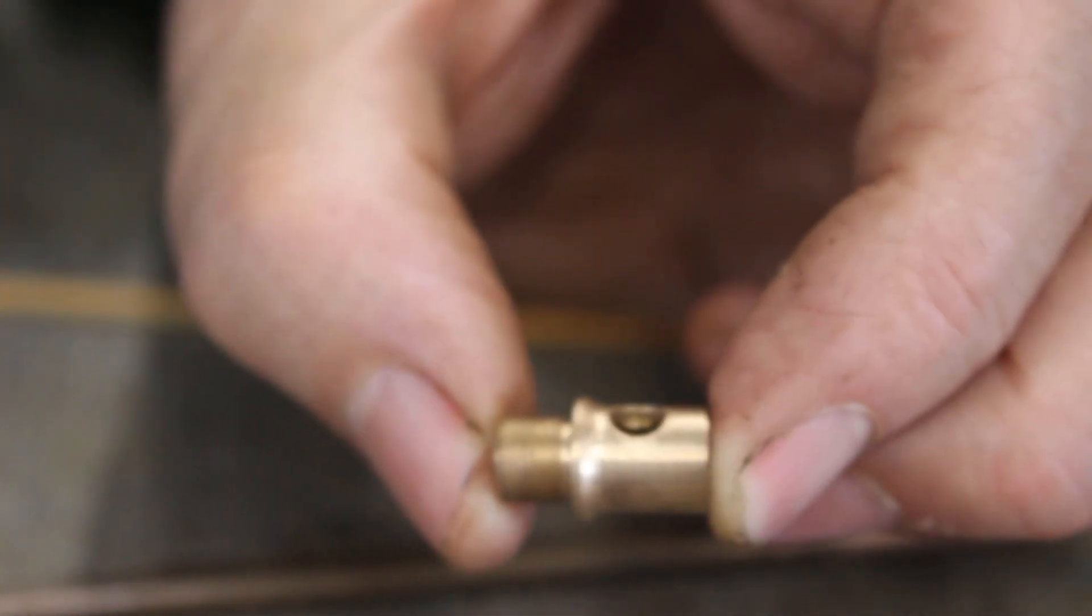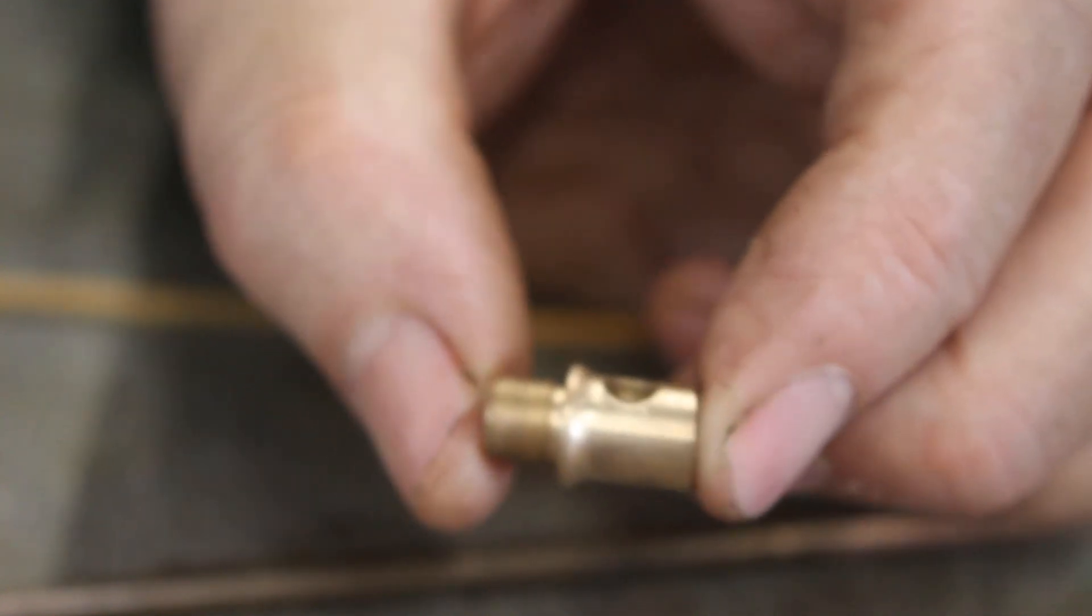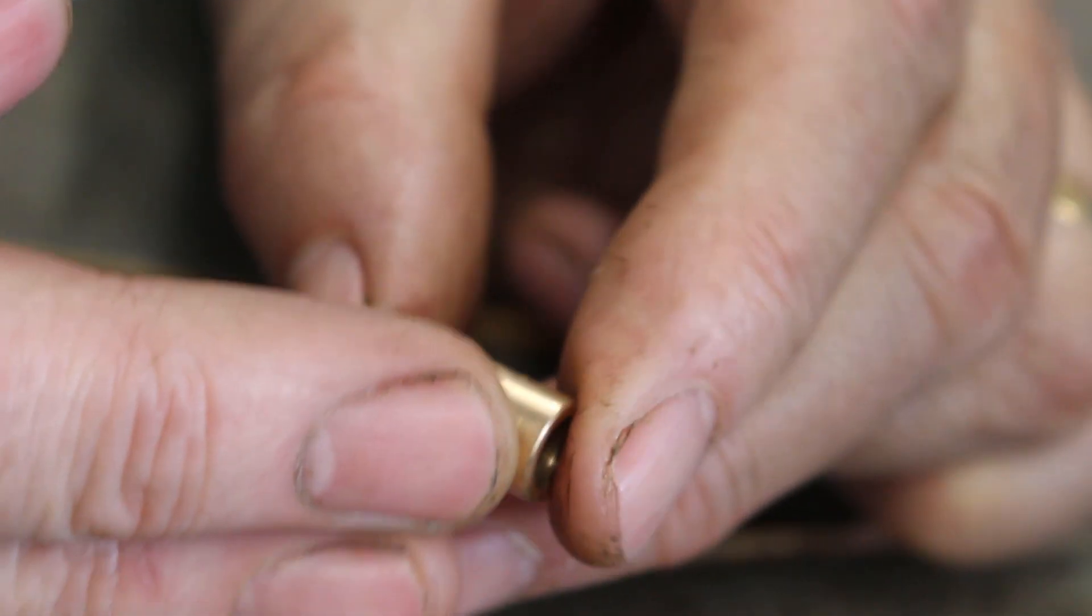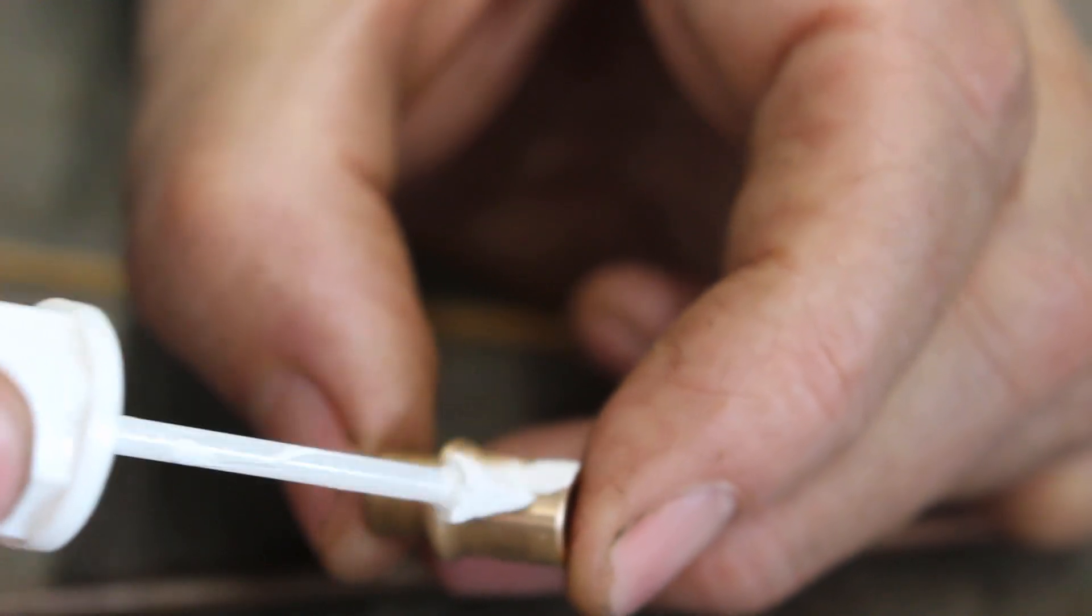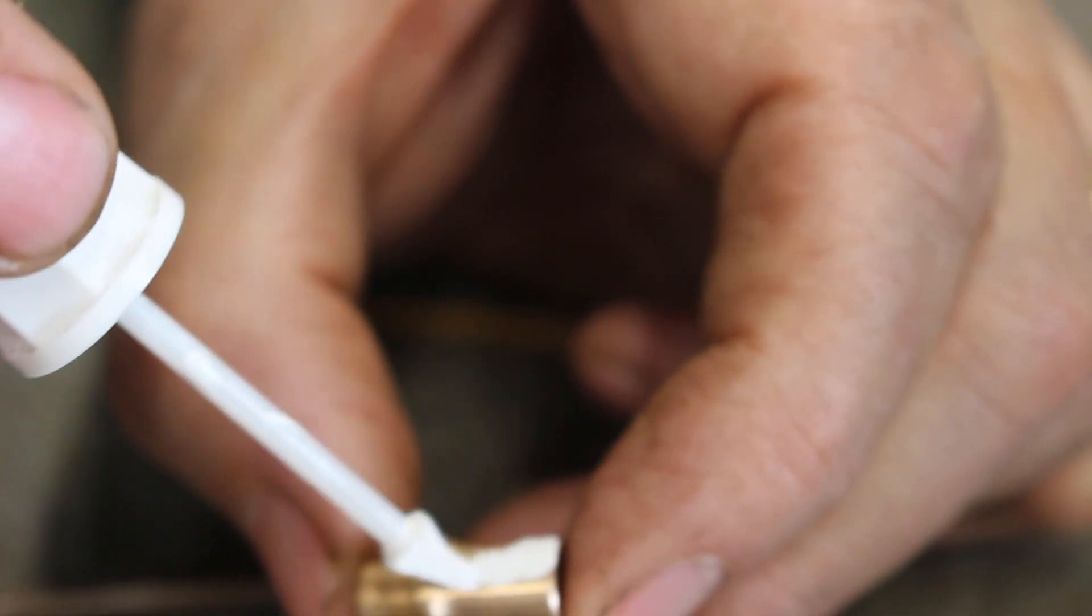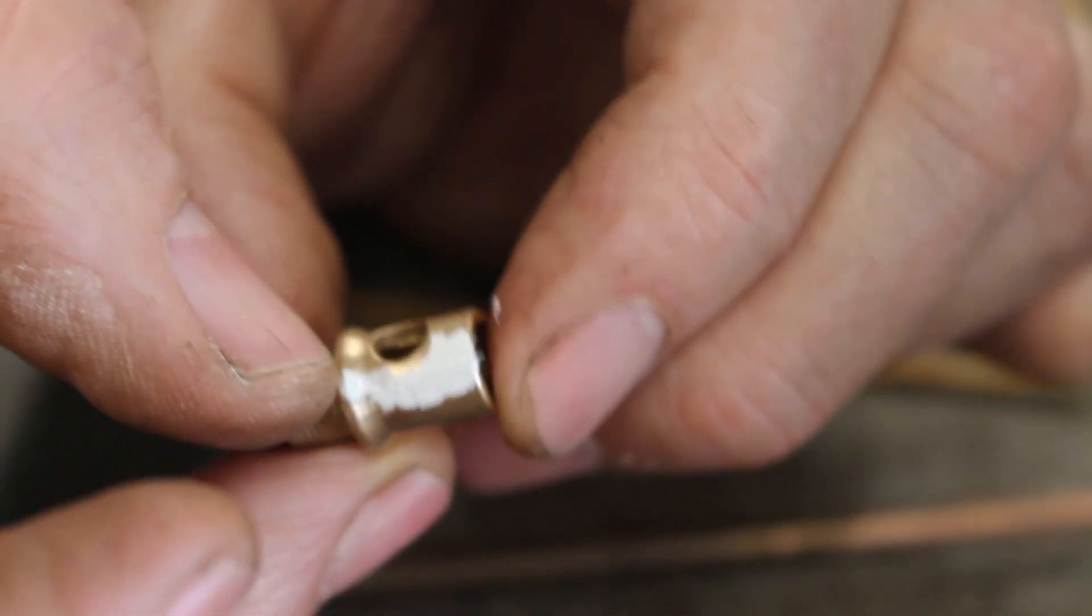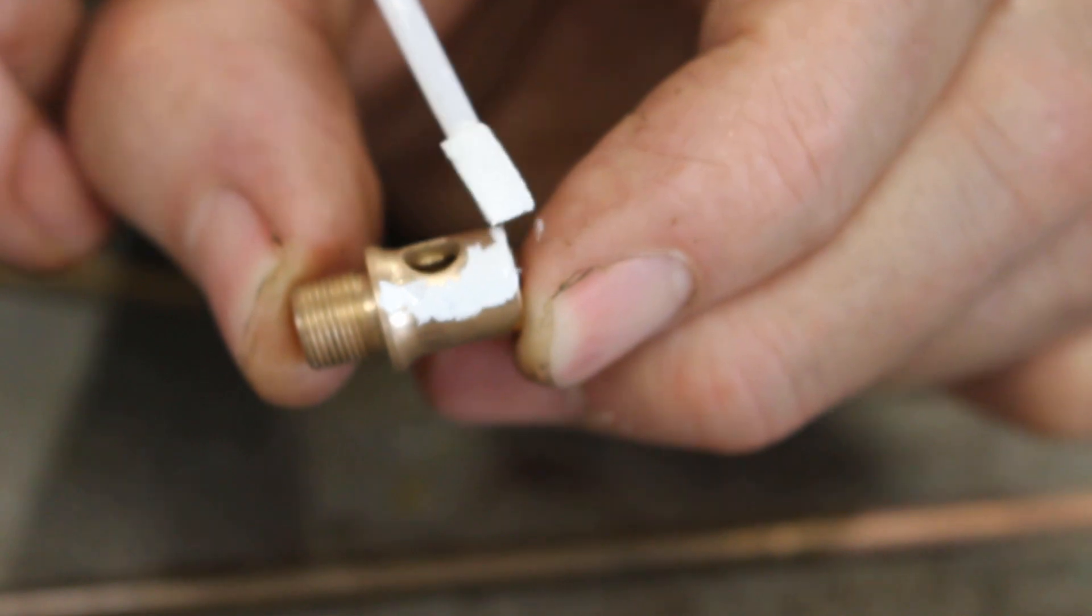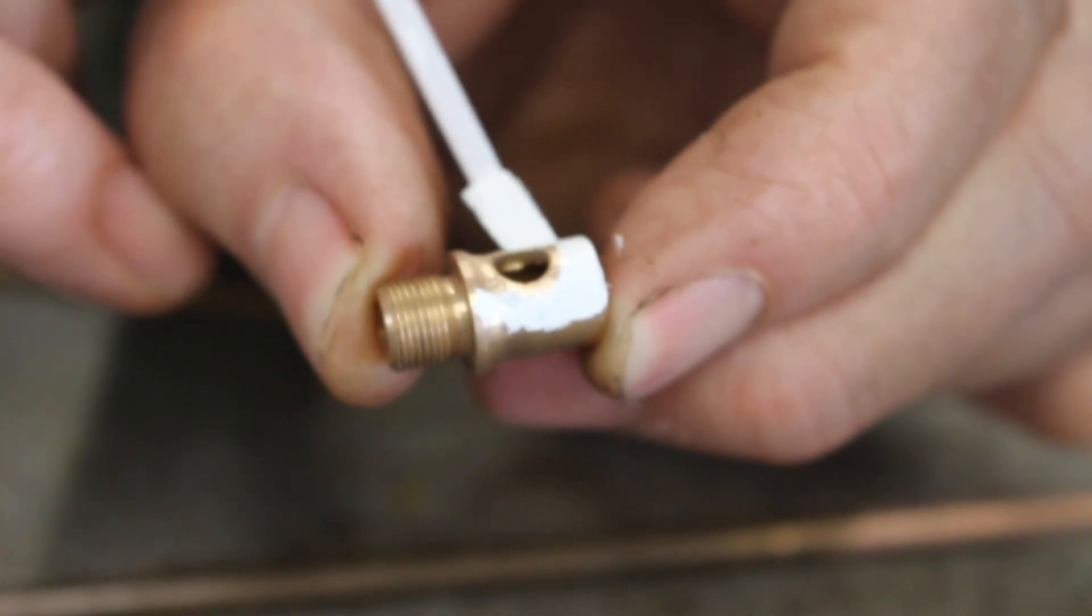I want the silver soldering on this little nozzle to be as neat as possible so I'm going to try a technique I've not used before, and that is apply some Tippex or correction fluid around where I want the silver soldering to be. The idea is that the Tippex will prevent silver solder flowing and sticking to areas I don't want it to be. So I'm just going to carefully put some around this nozzle.